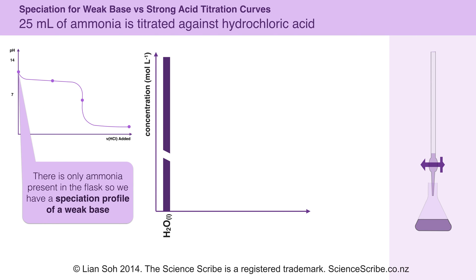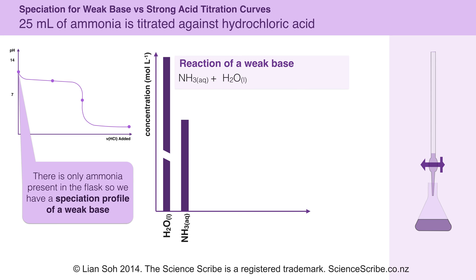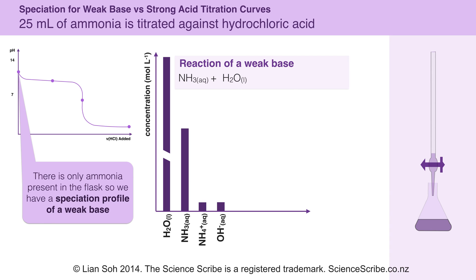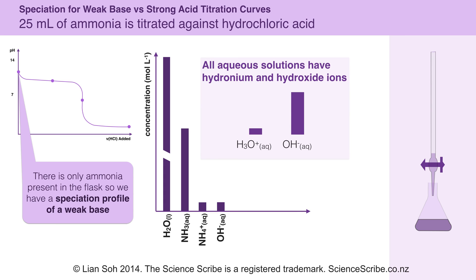Starting with point number one: there is only ammonia present in the flask, so we're looking at a speciation profile for a weak base. Since there's only ammonia present, I'm going to start with a big long bar for ammonia. Since this ammonia is in solution with water, it also forms ammonium and hydroxide ions, so some of that ammonia gets used up. All solutions have hydronium and hydroxide ions present, but since this is an alkaline solution, there will be a higher concentration of hydroxide ions than hydronium ions.